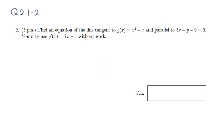Since it's parallel to this line, we can find the slope from there. We're going to start with 3x minus y minus 9 equals 0.